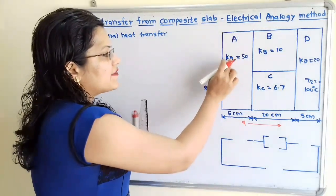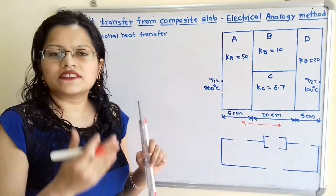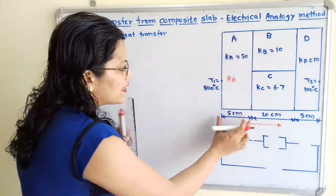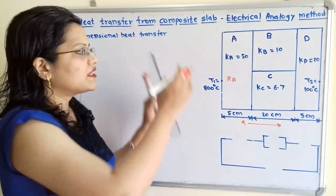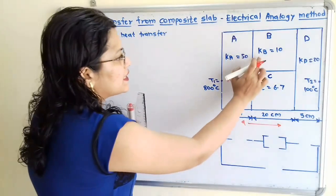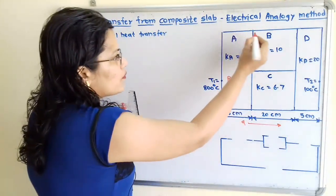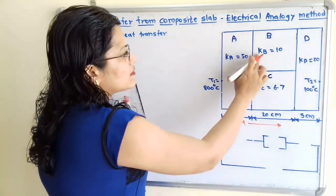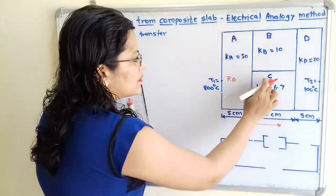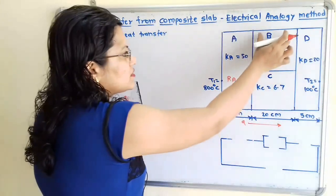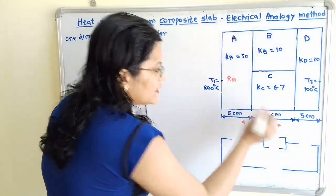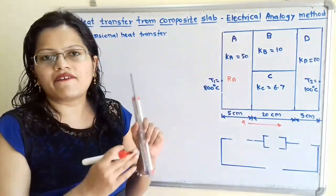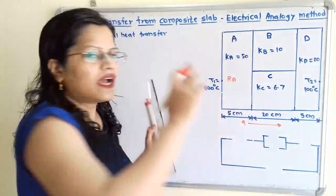For material A, conductivity KA is given as 50 Watt per meter Kelvin. We will consider the resistance of A as RA, and thickness is given as 5 centimeters. From material A, heat is transferred to material B as well as material C — both materials B and C are in contact with material A. For material B, conductivity KB is 10 Watt per meter Kelvin, and for material C, KC is 6.7 Watt per meter Kelvin. Materials B and C have the same thickness of 20 centimeters. When heat is transferred from material A it gets divided between B and C, so B and C are in parallel.